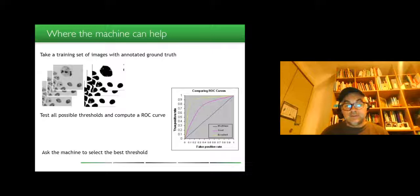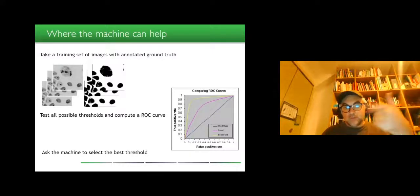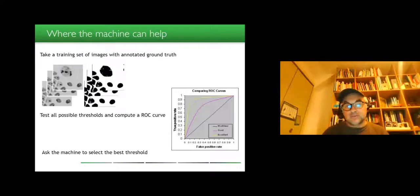Obviously you ask a machine to do it, to select this and to do the loop on the threshold and to select the best threshold. This is a practice clearly inspired by machine learning, for which even if it's very low dimension, the machine can of course help.